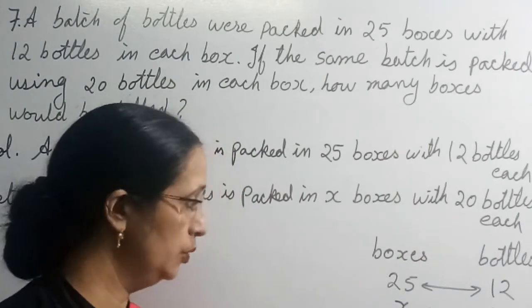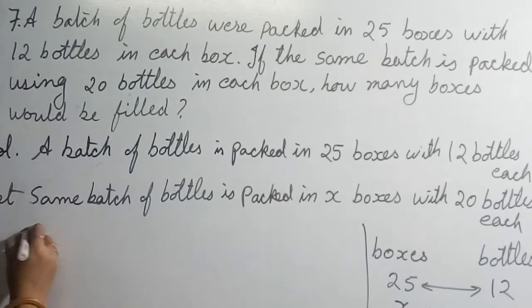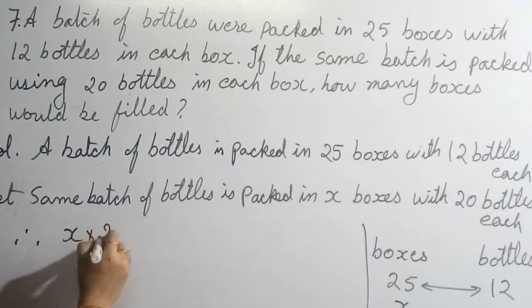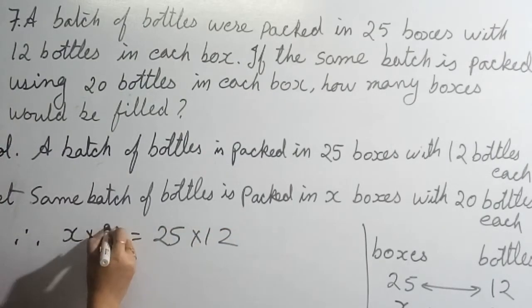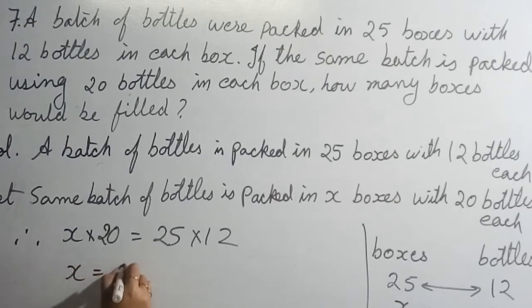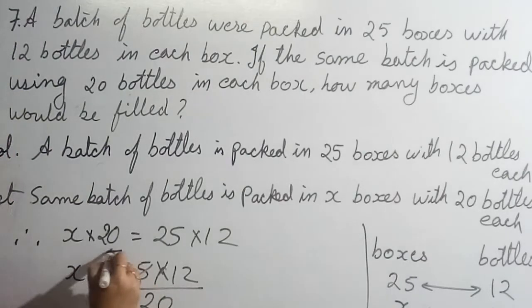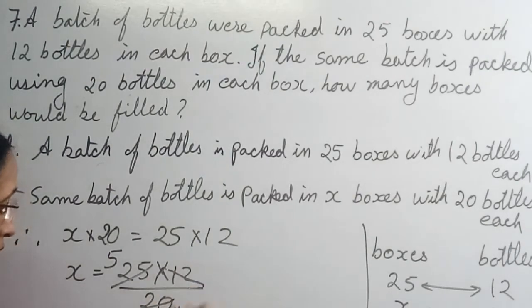So therefore my equation is x into 20 equals 25 into 12. Now x equals 25 into 12 upon 20. You can cancel by 5, so it will go by 5. 5 into 4 is 20, cancel. 4 into 3 is 12. 5 into 3 is 15. So x equals 15.